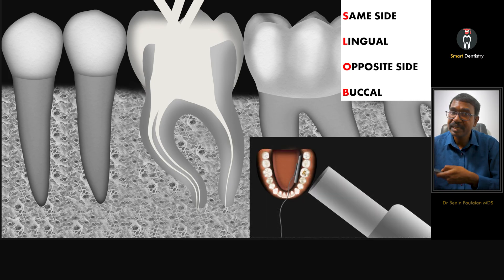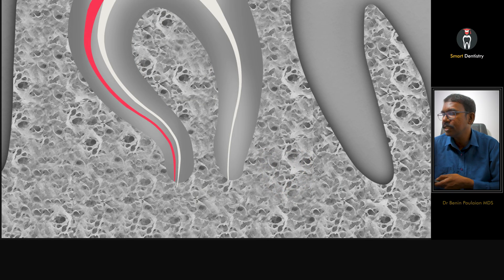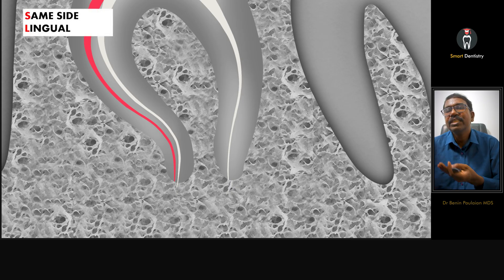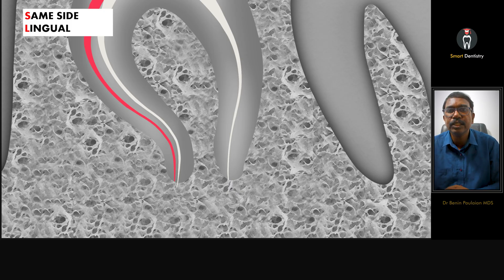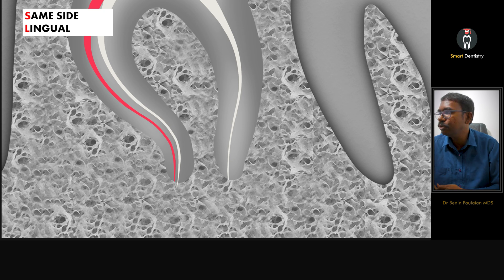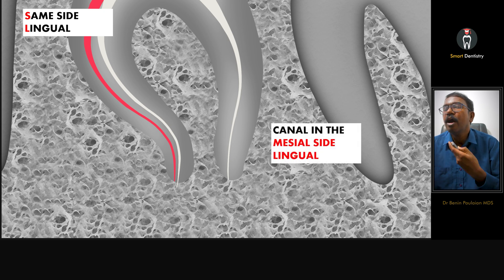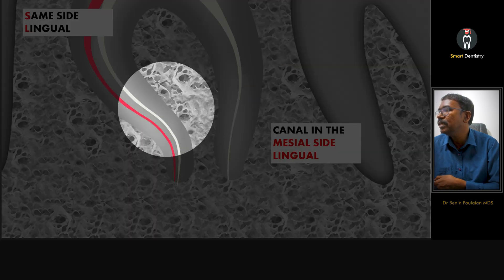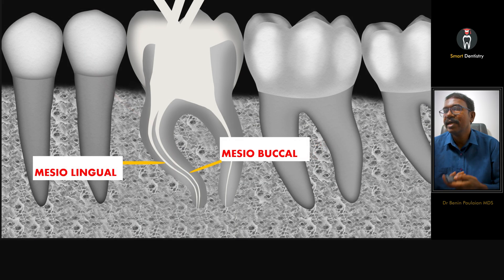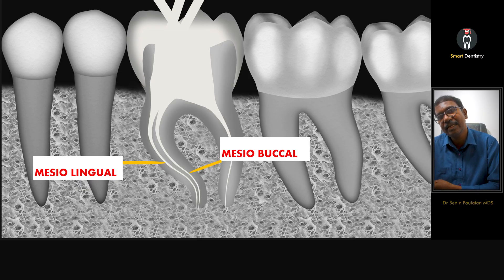In this radiograph, we gave a mesial angulation. The red-colored cone which has moved to the same side — the mesial side — is the lingual canal, which is the mesio-lingual. The canal present on the opposite, distal side is the mesio-buccal canal. So the mesio-lingual is present mesially and the mesio-buccal is present distally.